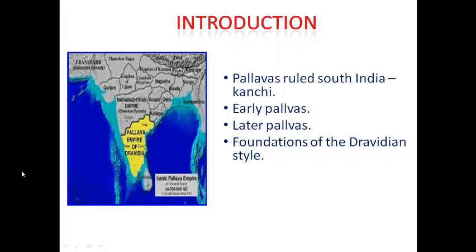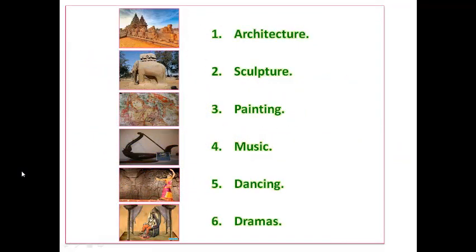First, we are going to see a small introduction. Pallavas ruled South India with their capital Kanchi. The history of the Pallavas may be broadly divided into the early Pallavas and the later Pallavas. The Art and Architecture of the later Pallavas form a very brilliant chapter in the history of South Indian art. Their productions provided the foundation of the Dravidian style. The Art of the Pallavas is studied under six headings: Architecture, Sculpture, Painting, Music, Dancing and Drama.